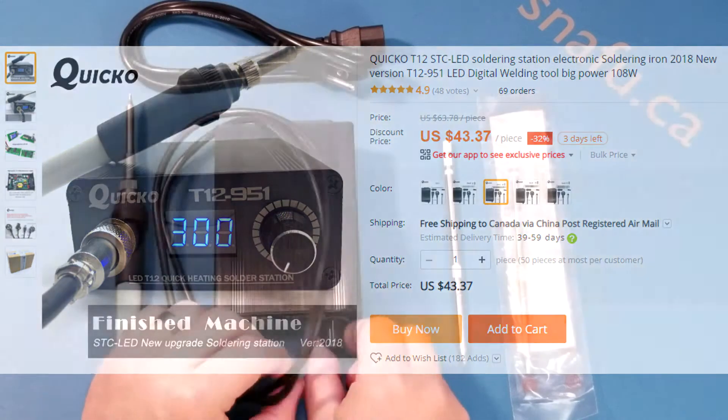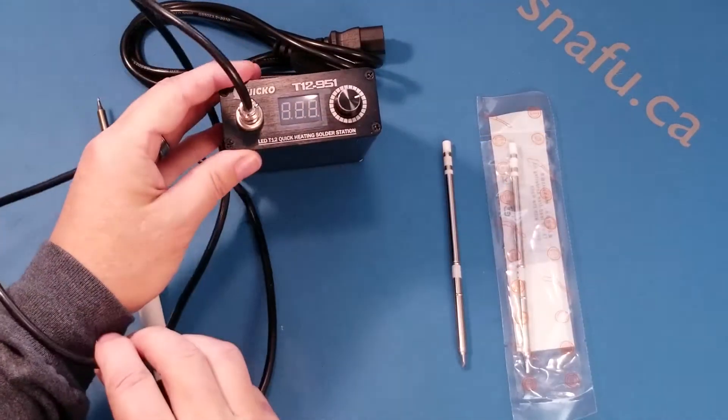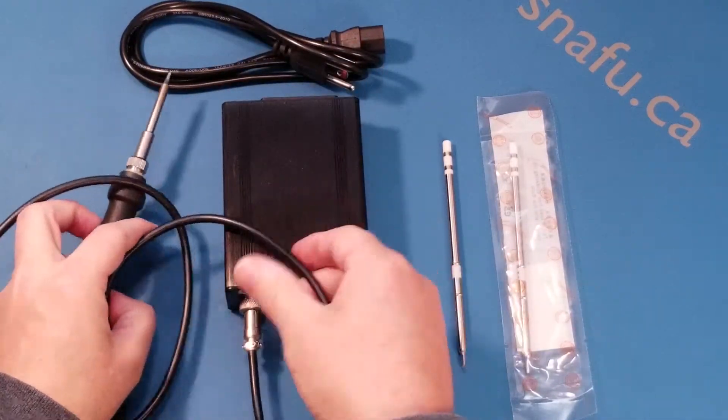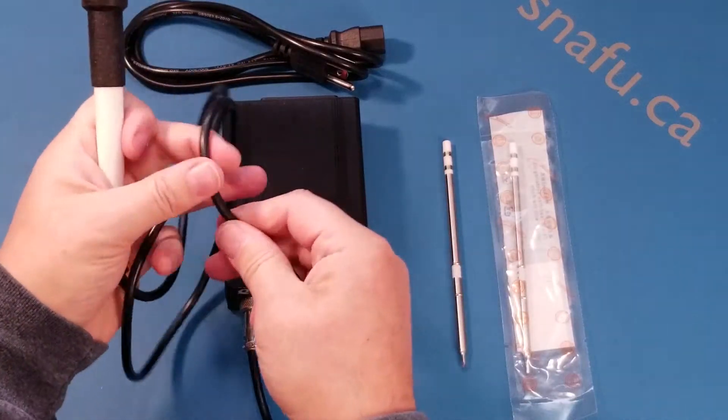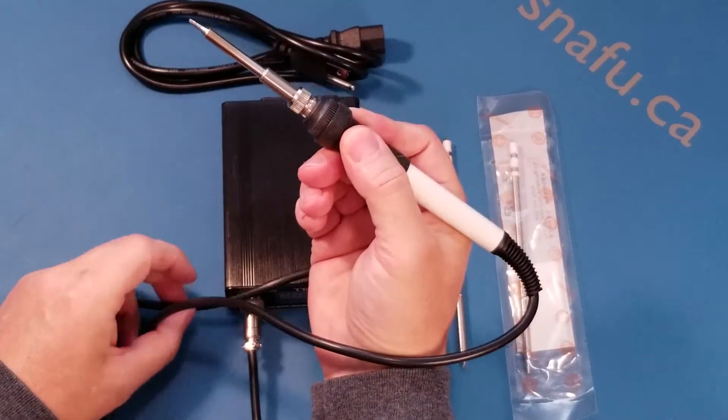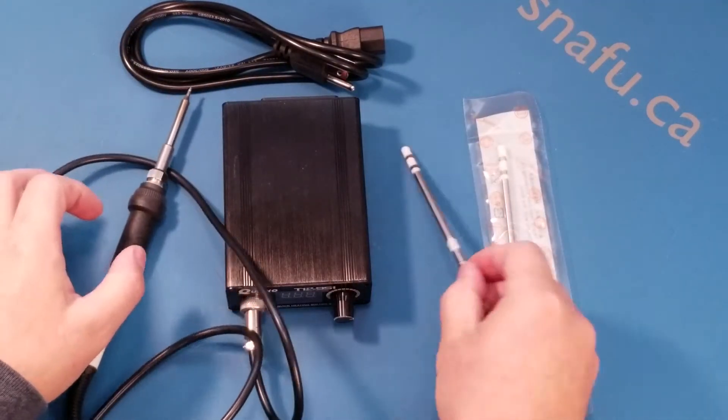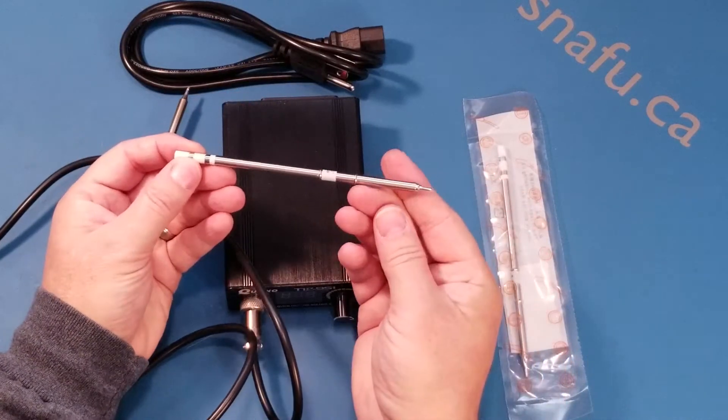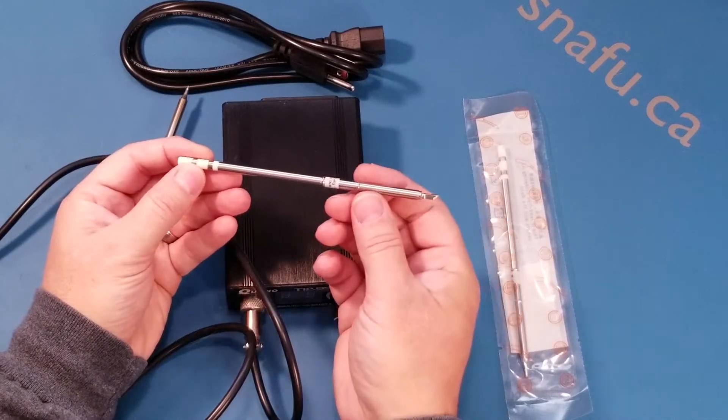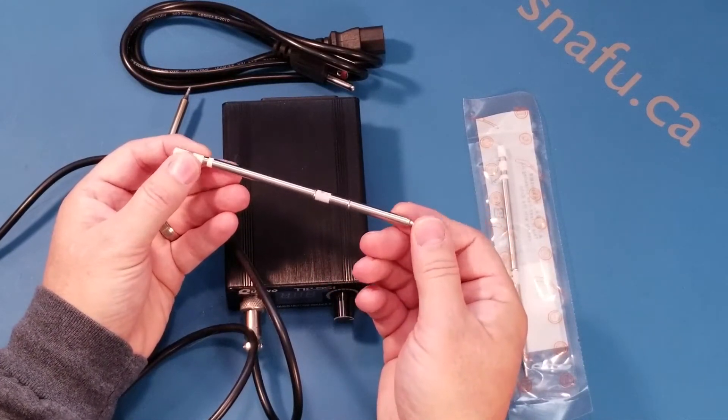Let's have a look at the next contender. This is the Quikko T12951. Control unit that takes 110 and converts it down into about 24 volts. A nice flexible silicone lead. Again, the grip is a nice rubberized, feels pretty good in the hand. And it came with a couple of extra tips. With these style of tips, the heater is actually right in the end of the tip. So the tips are a little bit more expensive to buy, but supposedly provide more accurate temperature regulation. Let's have a look and see how it works.